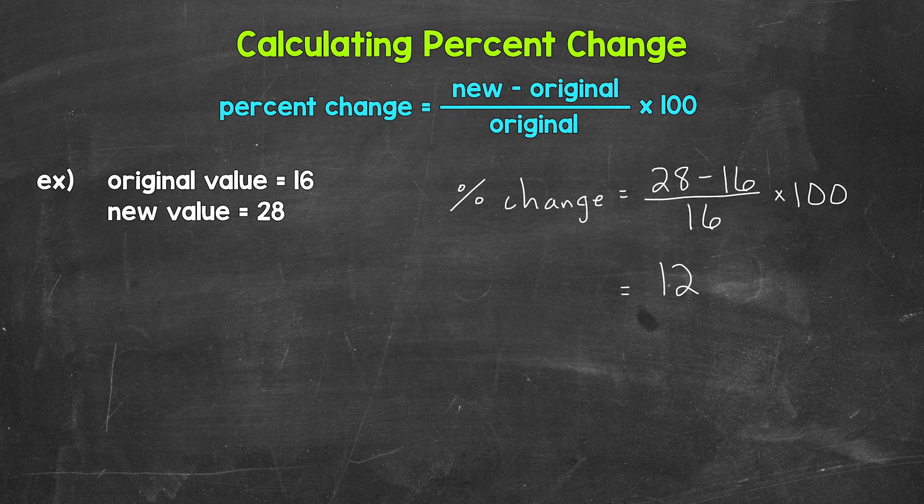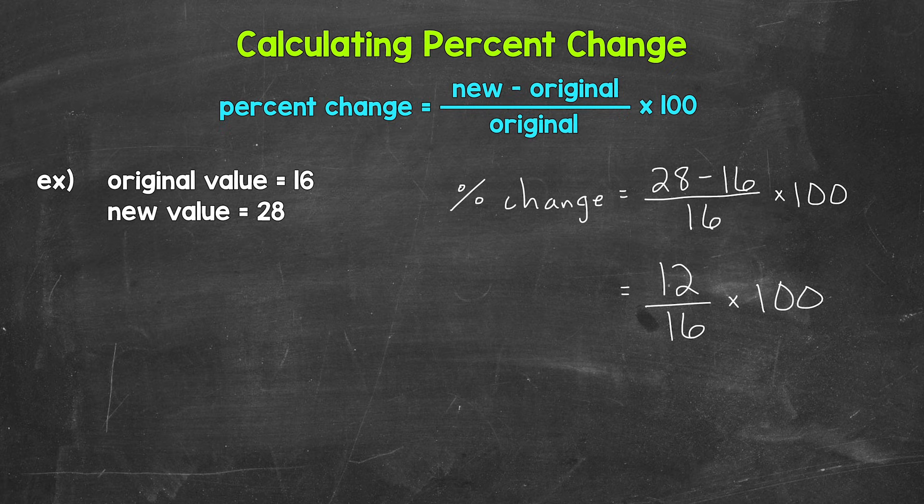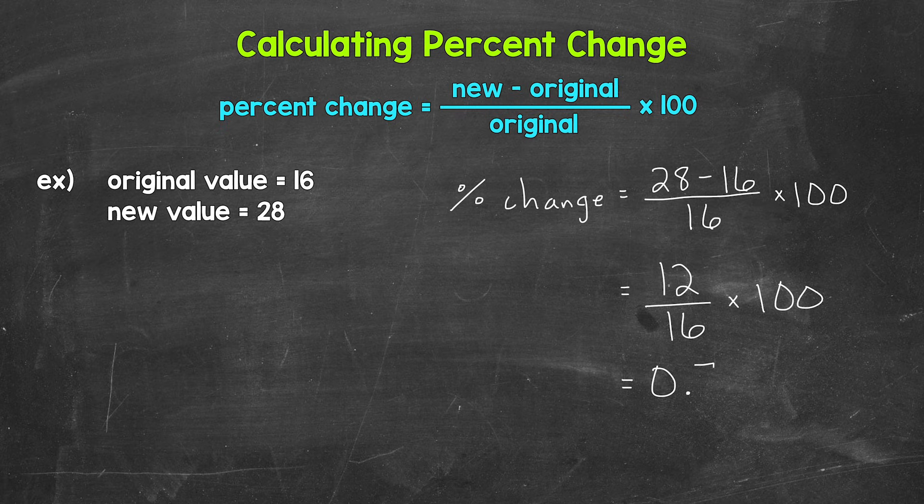So we have 12 over 16 times 100. Now let's divide. So we have 12 divided by 16. That gives us 75 hundredths, 0.75.